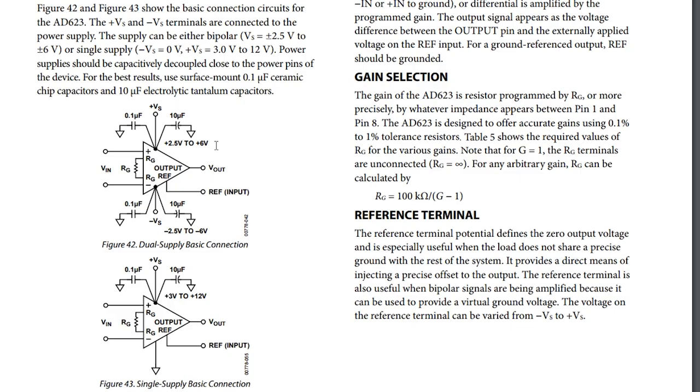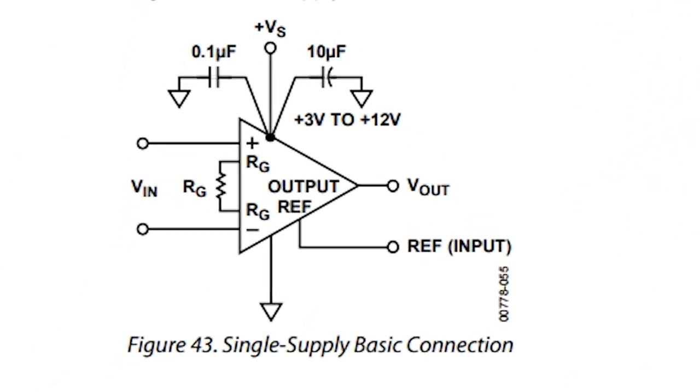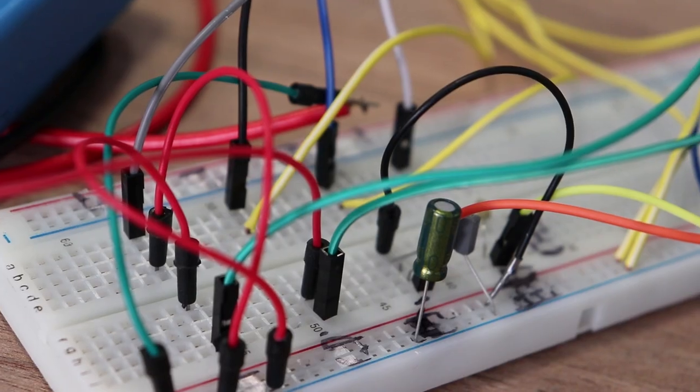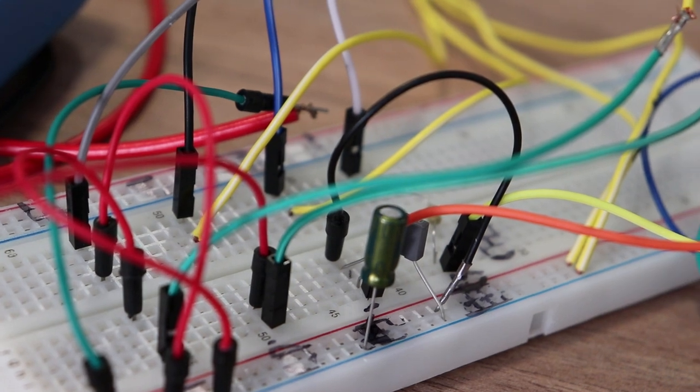In my project I will use the sample scheme for single supply configuration. I only need to connect everything to correct pins, capacitively decouple the power source, and select the appropriate resistor. I need as high amplification as possible so I will use 100 ohms. The first prototype looks hideous but its only purpose is to check if everything is working.